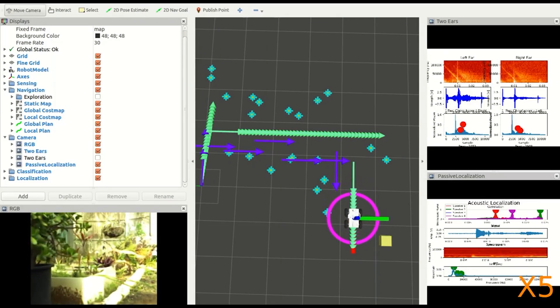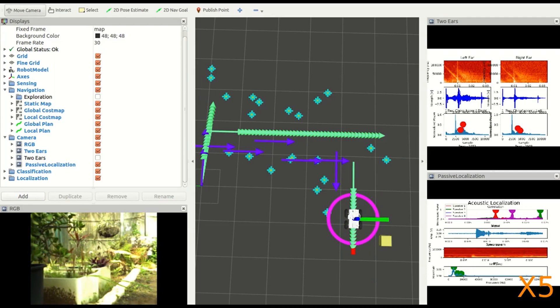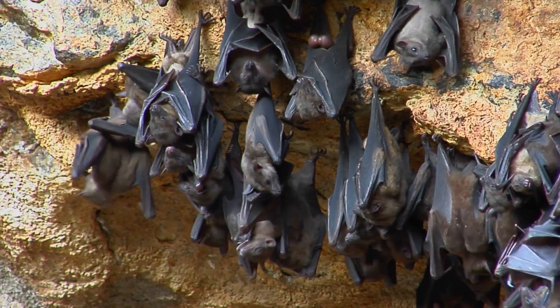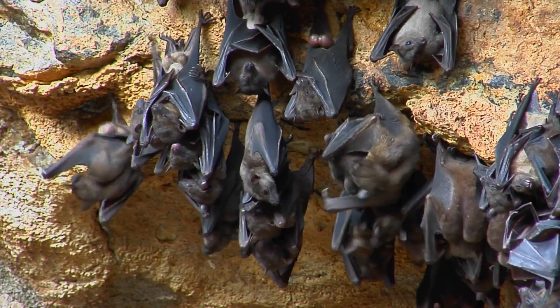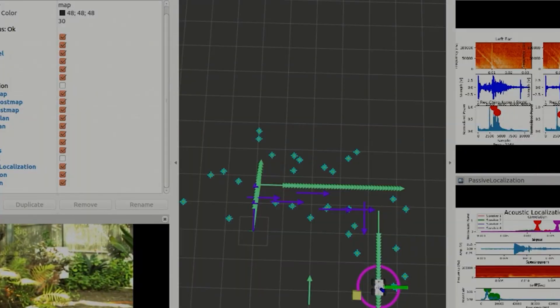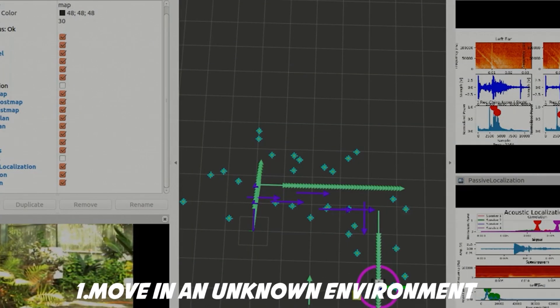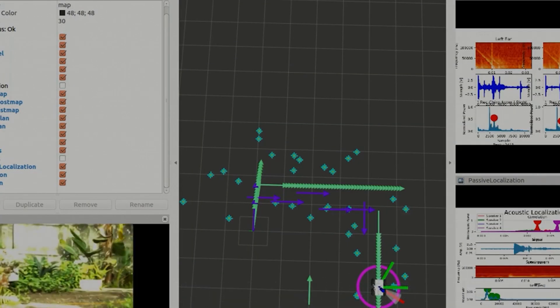Bats transmit sounds, usually using their mouths, and receive the echoes that return from the environment using their ears. The bat's brain processes the echoes, and this allows the bat to move in an unknown environment without crashing into obstacles, identify objects around it, and map the location of the objects.